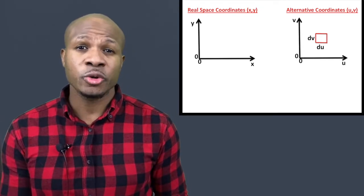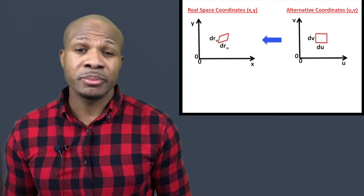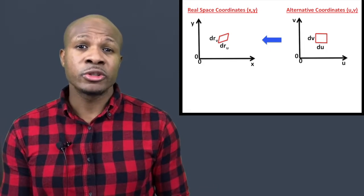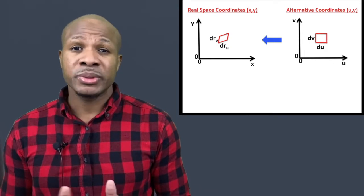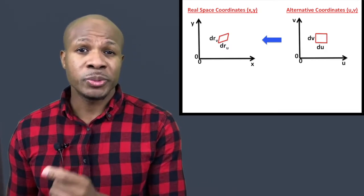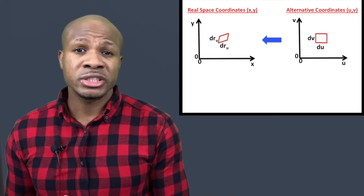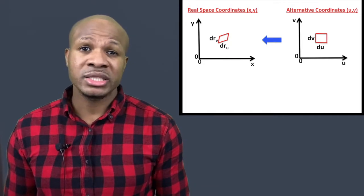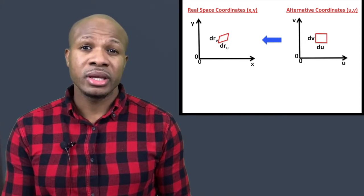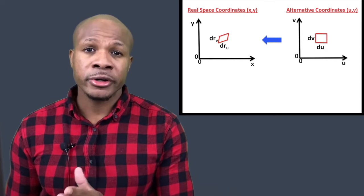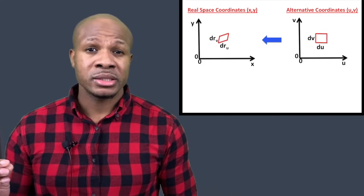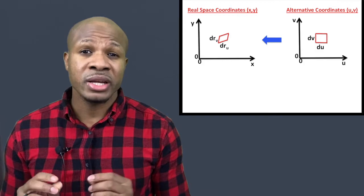A tiny square in uv space doesn't remain a square when mapped back into real space — it may change from a square to a parallelogram. The du segment gets converted into a segment dr_u, and just because du is horizontal in uv space doesn't mean it stays horizontal in real space. dr_u could be a slanted segment with both x and y components, and similarly for dr_v.